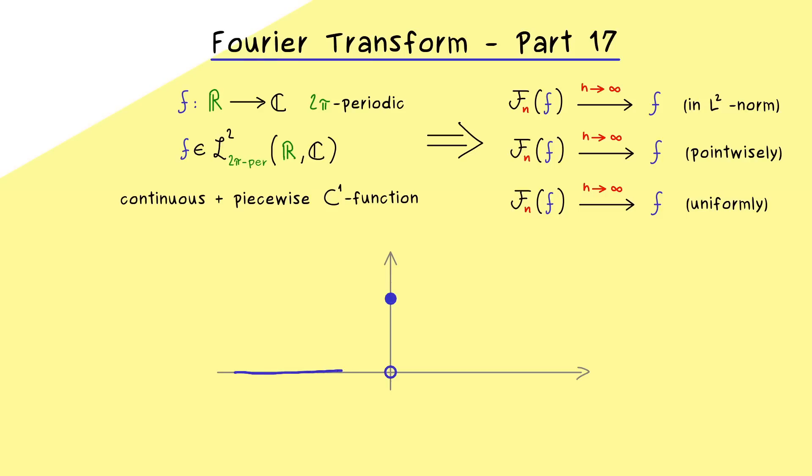For example, it would be really nice to know what the Fourier series does for this function here. Of course, for a fixed natural number n, our approximation F_n of f will always be a continuous function. So there will be no jump for F_n of f, but in the limit it could have the jump. In this case, we want to know what is the value at the jump point. This means we have to look at the value F_n of f at 0 and then send n to infinity.